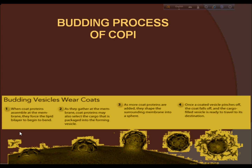Mainly in integral membrane proteins, the coat is found. First, when coat proteins assemble at the membrane, they force the lipid bilayer to bend. Secondly, as they gather at the membrane, coat proteins may also select the cargo that is packed into the forming vesicle. As more coat proteins are added, they shape the surrounding membrane into a sphere. At last, once a coated vesicle pinches off, the coat falls off and the cargo-filled vesicle is ready to travel to its destination.